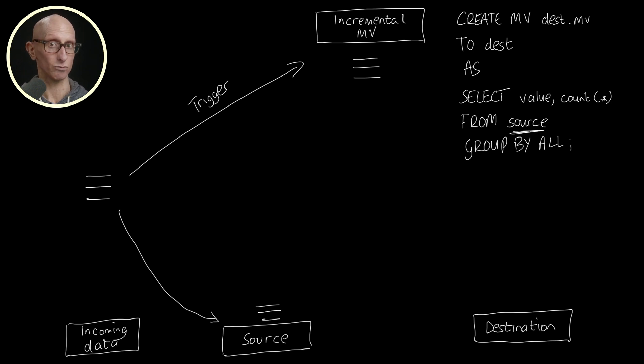The materialized view will then run its query with source referring to just that batch of three rows in this case, and it'll write the result to the destination table. So this approach lets us apply data transformations to huge datasets without having to process the entire source data each time.